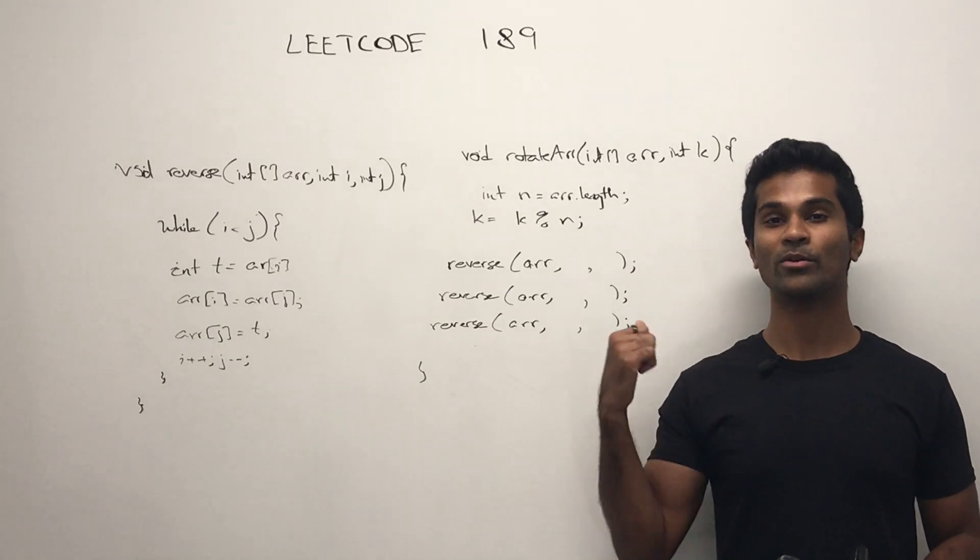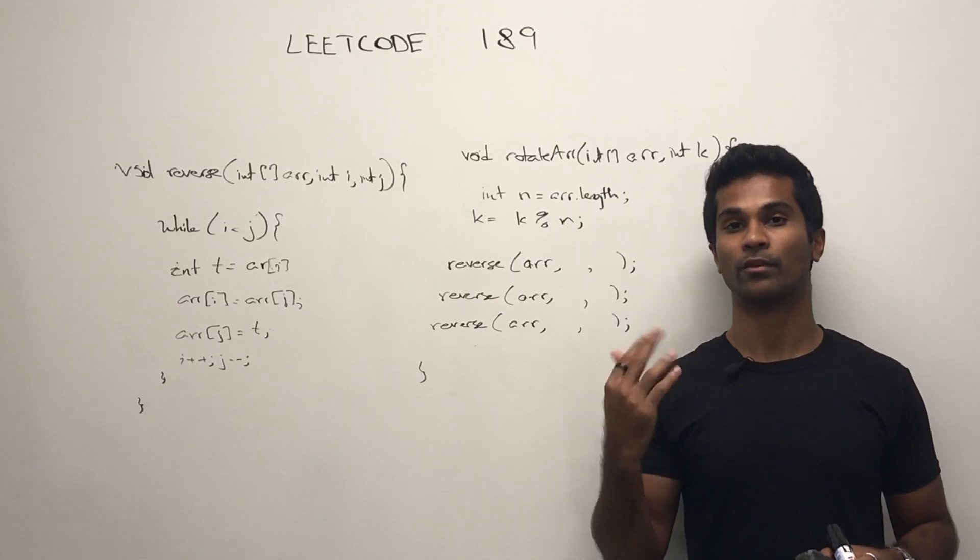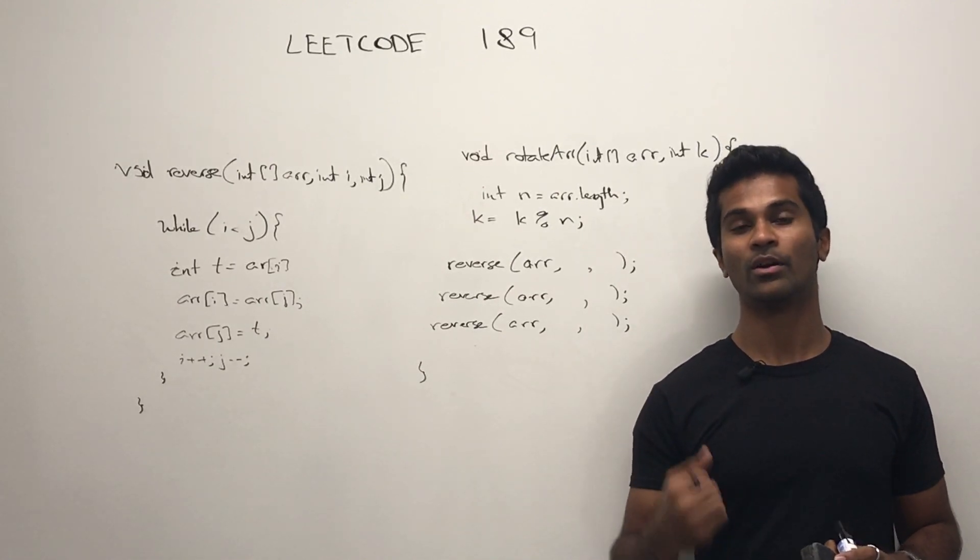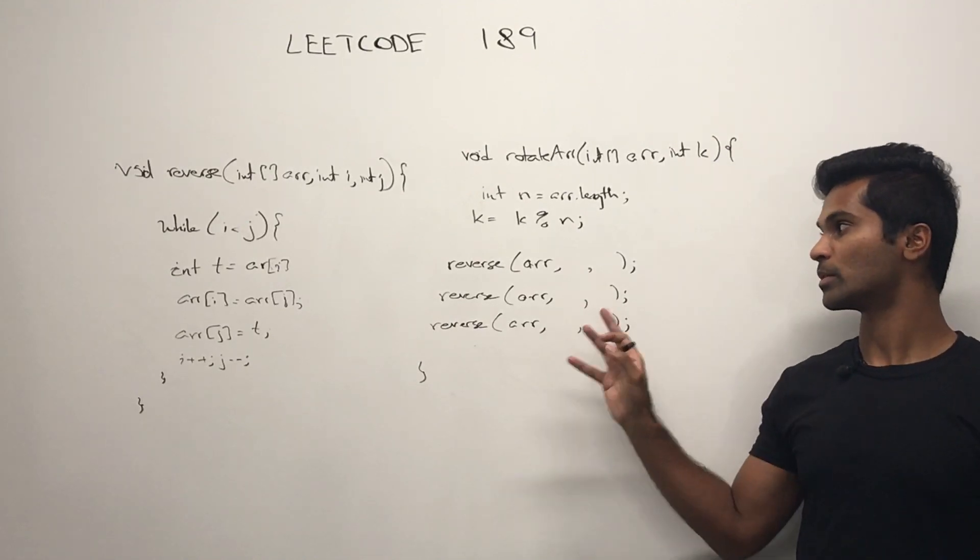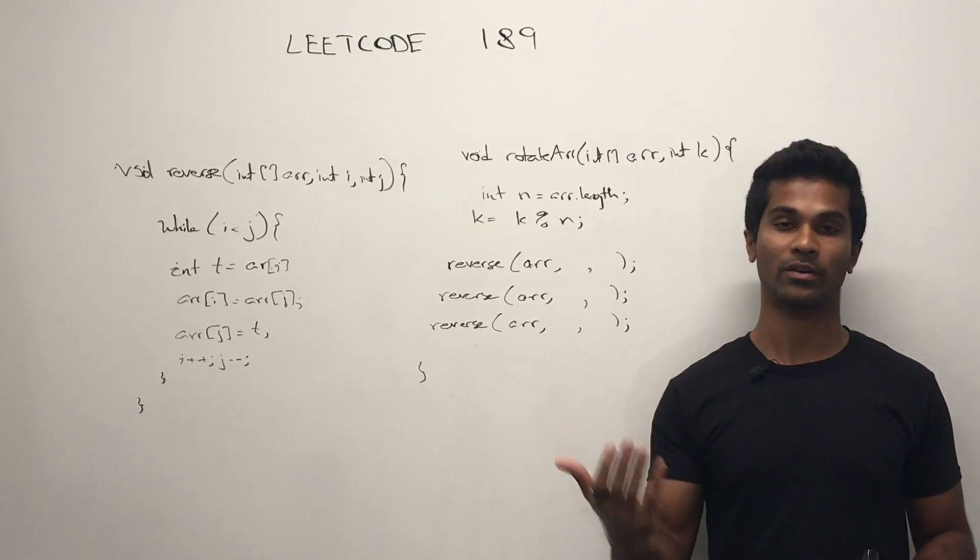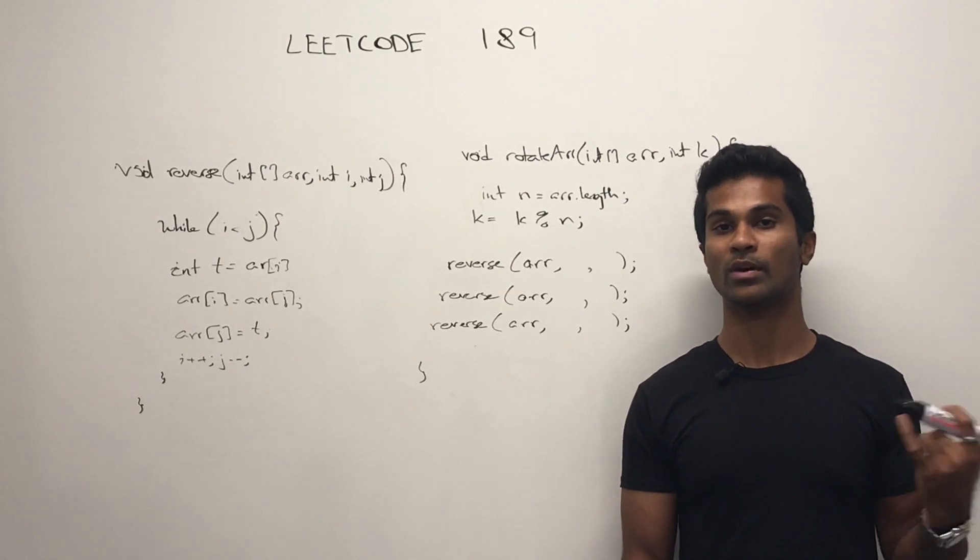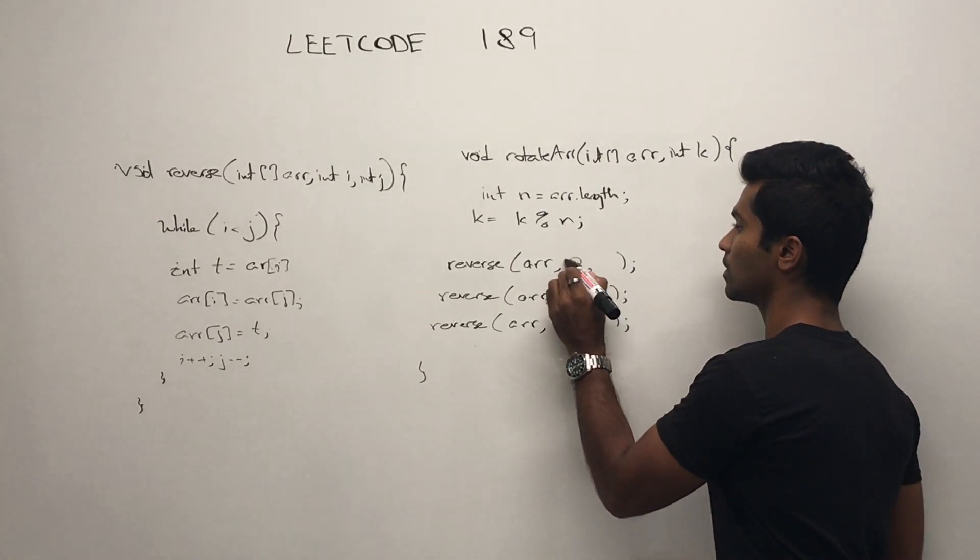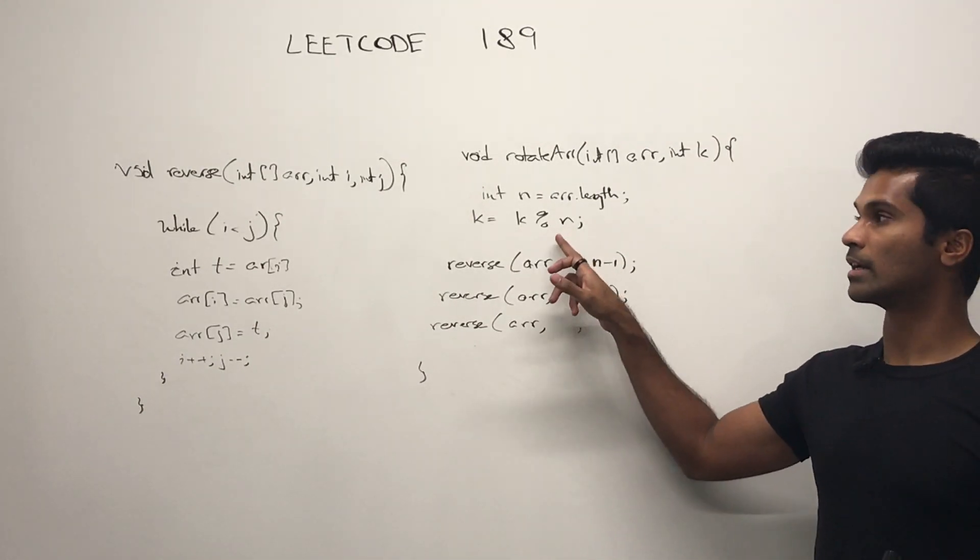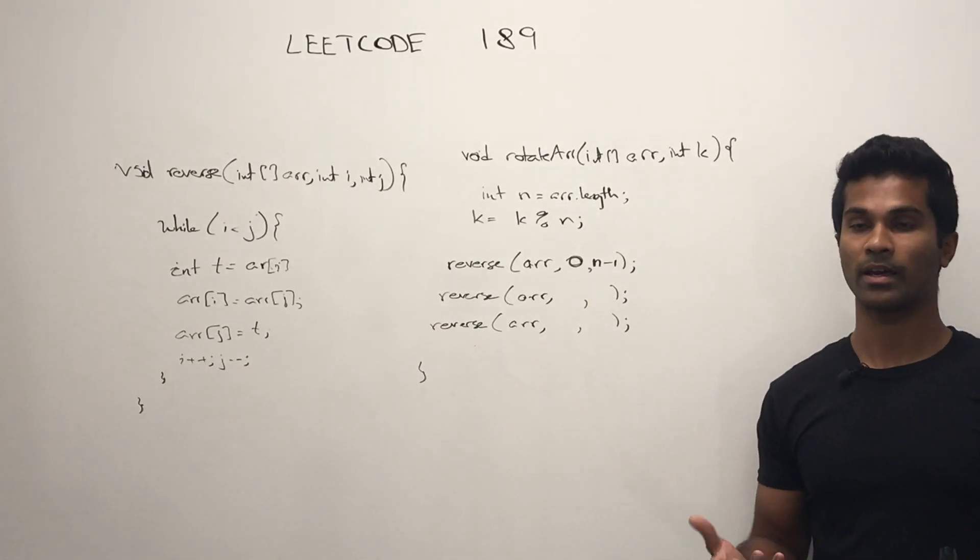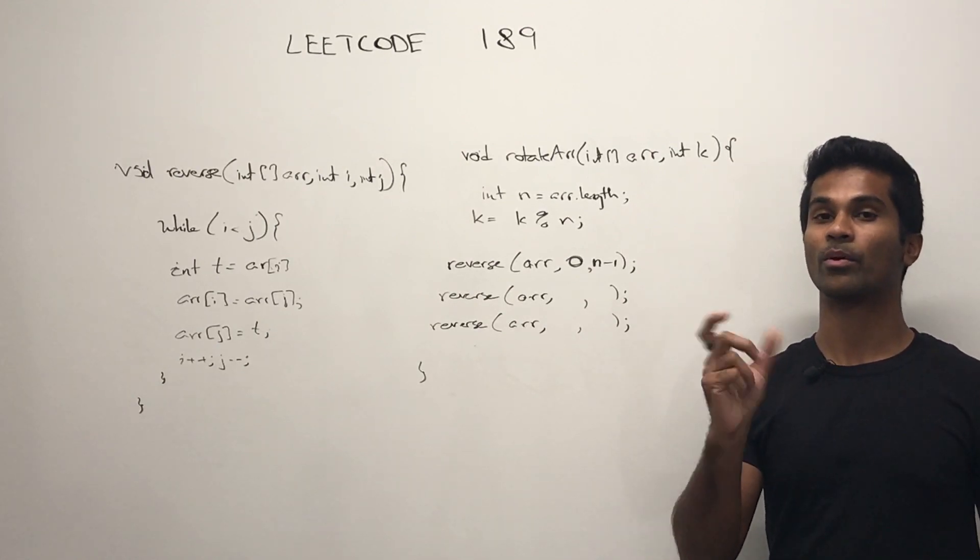So I wrote most of the skeleton code, but I left the arguments blank. Now recall that I called reverse three times for the earlier example. And the first time we called it, we reversed the whole array. So you can pause it right now and mentally fill in what these arguments would look like. The first time since we flipped the whole thing, we're going to be doing it from zero to n minus one. Now we're still going to do k modulus n because we want to optimize the number of times we're running k.